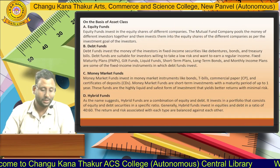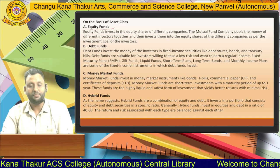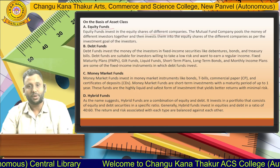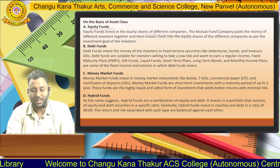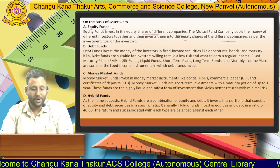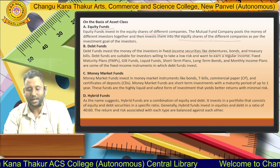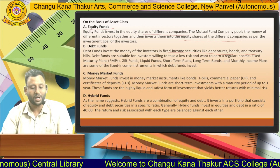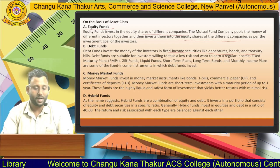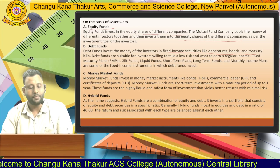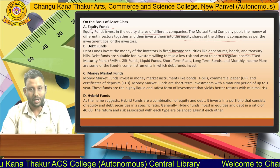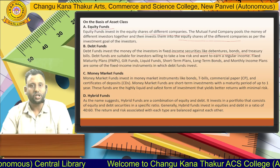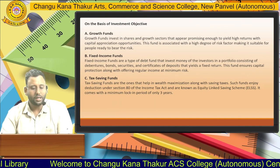On the basis of asset class: first is equity funds, where the fund manager invests the money in equity shares of different companies. Second is debt funds, which invest in fixed income securities like debentures, bonds, and treasury bills — the risk here is moderate to low. Third is money market funds, which invest in money market instruments like bonds, T-bills, commercial paper, and certificates of deposit. Fourth is hybrid funds, which are a combination of equity and debt mutual funds.